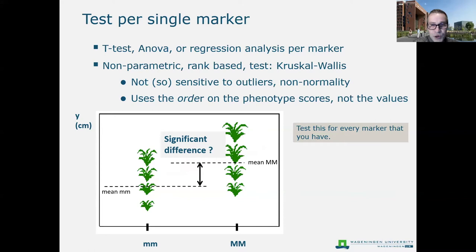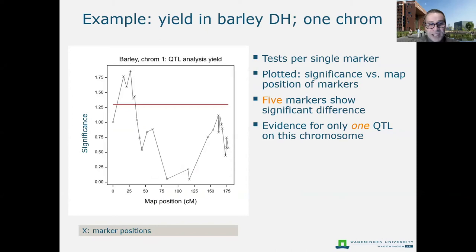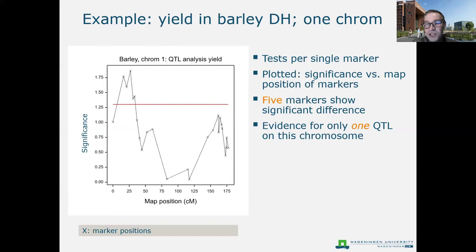We do this not just for a single marker but for every marker on our genome. The result could look like this — I'm plotting just one linkage group. We plot the significance at each marker against the map position in centimorgan, and the dots are connected by straight lines, but we only have information at the marker positions themselves. In this case we see five markers that show a significant difference, which is evidence of only a single QTL, because these five markers are closely linked on the same linkage group.